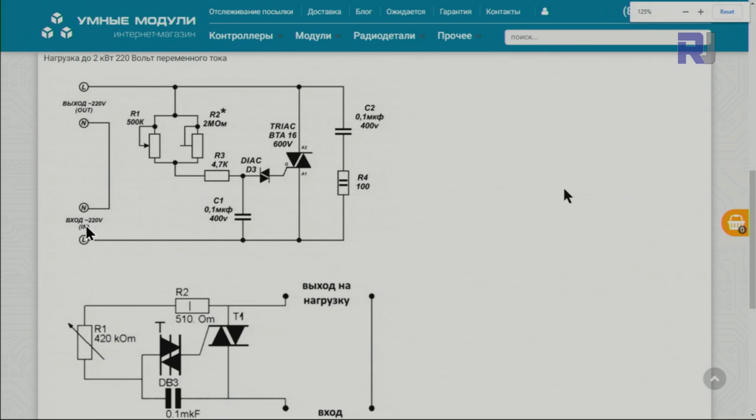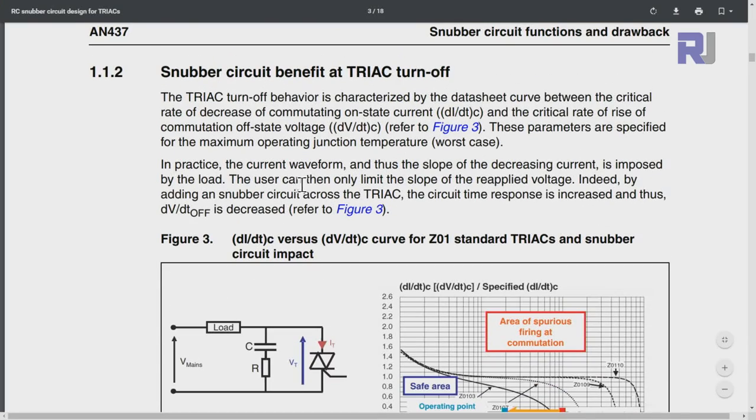This is our BTA16-600, that's our triac, and we have a diac here. This is a snubbing circuit that is suppressing unexpected hysteresis or voltage change. I'll provide you the link for this document from Analog Devices, AN-437.